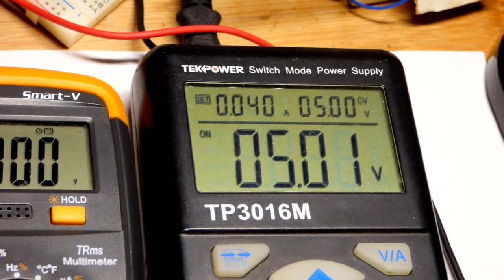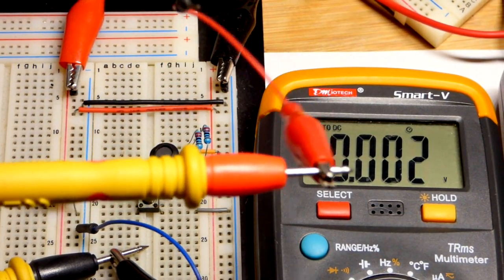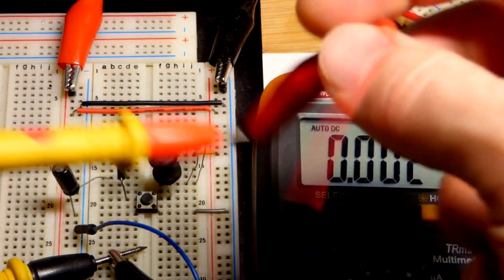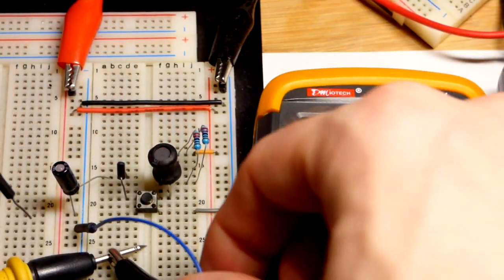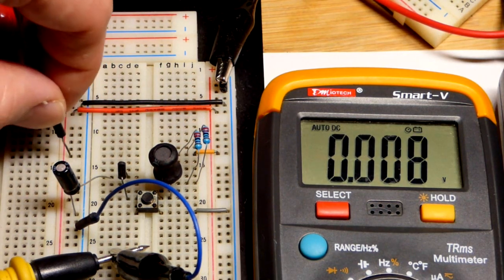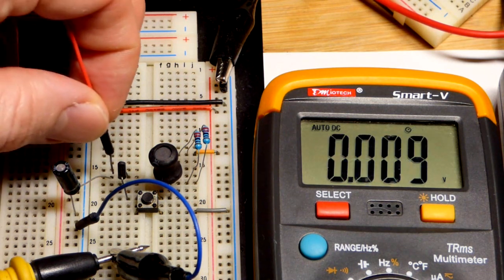You can see we got the power supply set to five volts. The multimeter has these little alligator clips that I crimped a jumper wire to, so it's easier to take voltage measurements. We got the black one to the negative supply rail, and you can see we got five volts at the board.